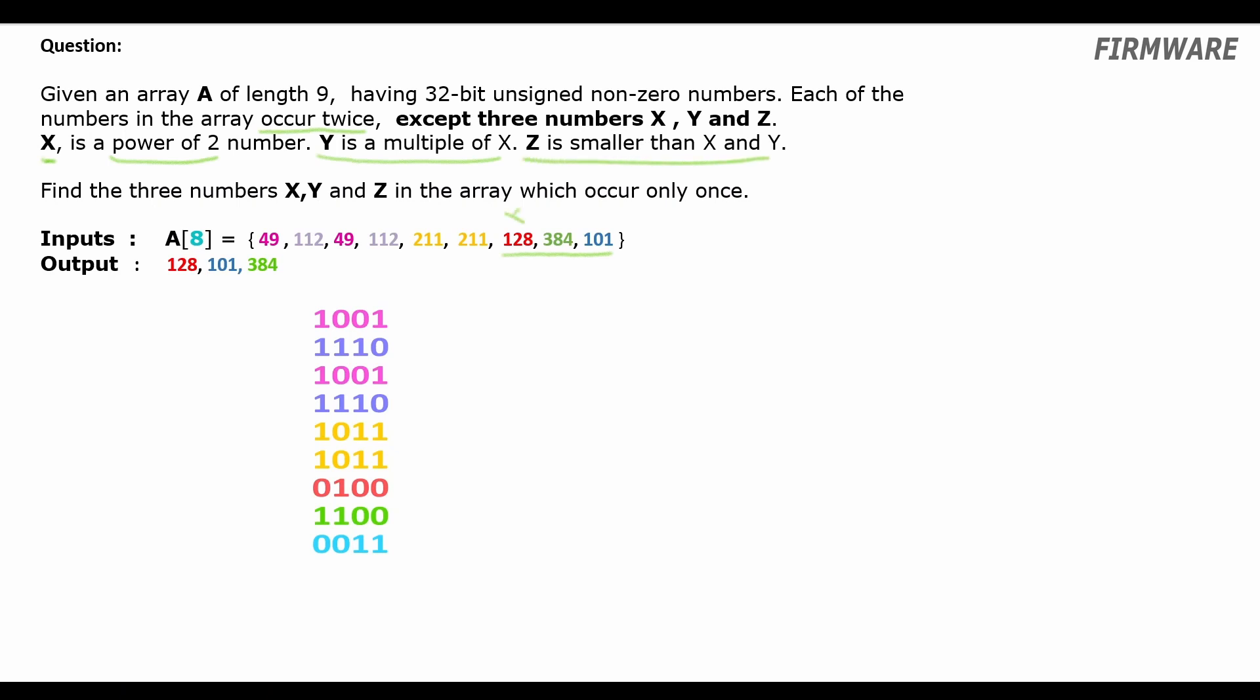So your task is to find these numbers X, Y and Z given the input array. I would suggest you to watch the previous episode of this series in which we solved a similar but simpler question, where we had to find only two non-repeating numbers in an array. If you want to try this question yourself, please pause this video now and start coding.